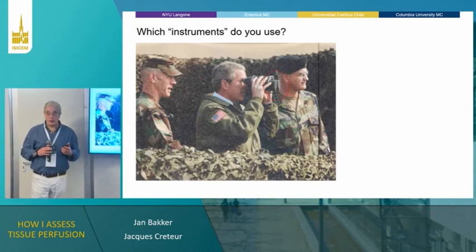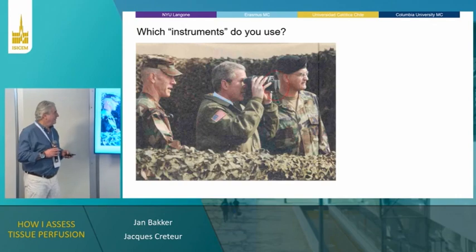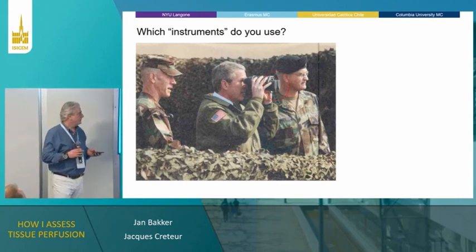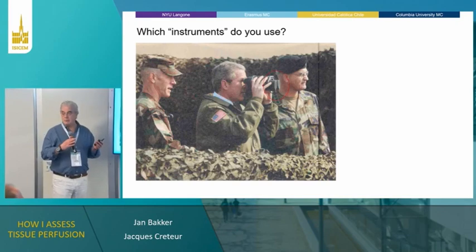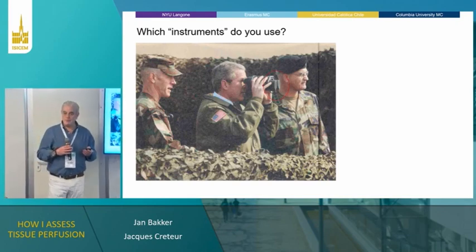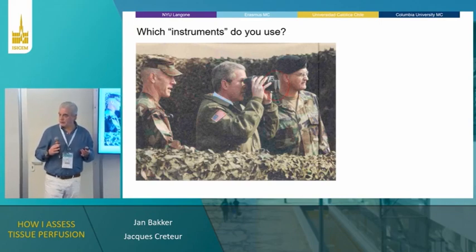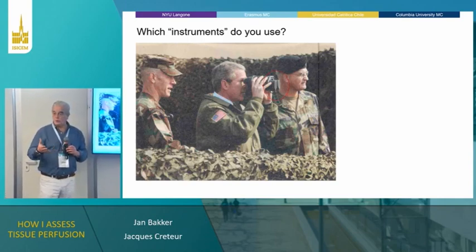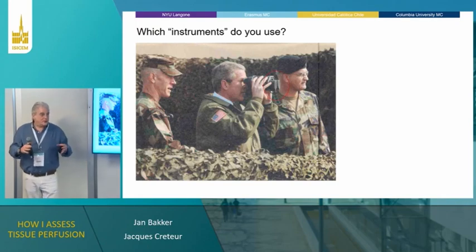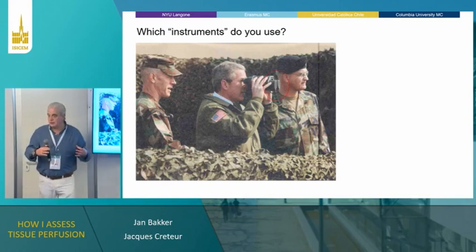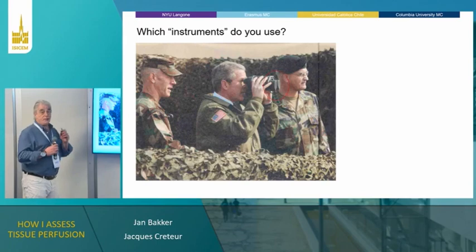Remember that if you use an instrument, you have to use it right. I've seen many people using an instrument where they have no clue how it works — they're looking for a number. Pulse oximetry is a nice example. When you walk into a room where someone is in trouble and you see a pulse oximeter on every finger, you know the patient is in trouble. They didn't find a signal and don't understand there is no signal if there is no perfusion in the periphery.